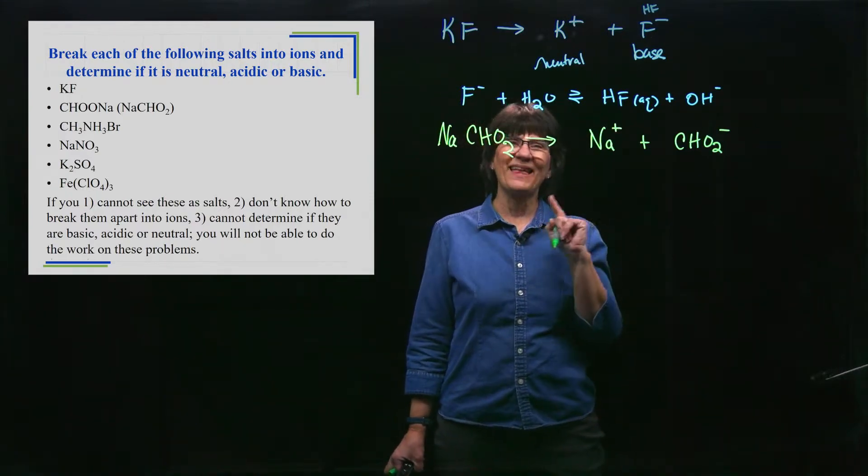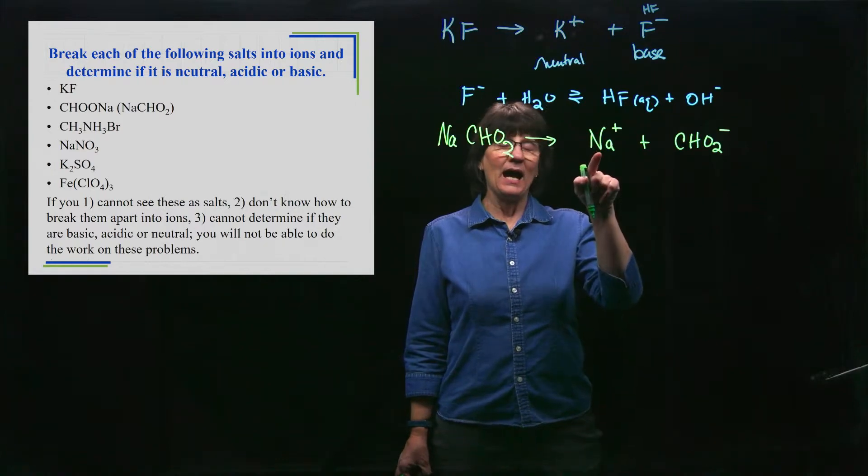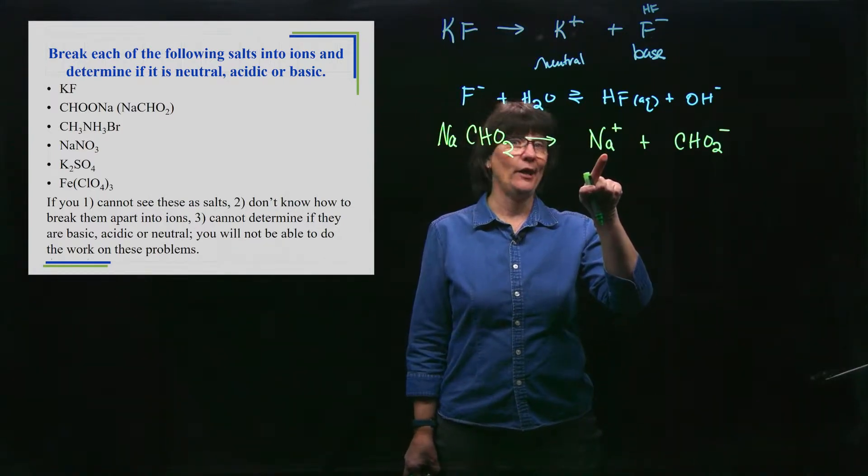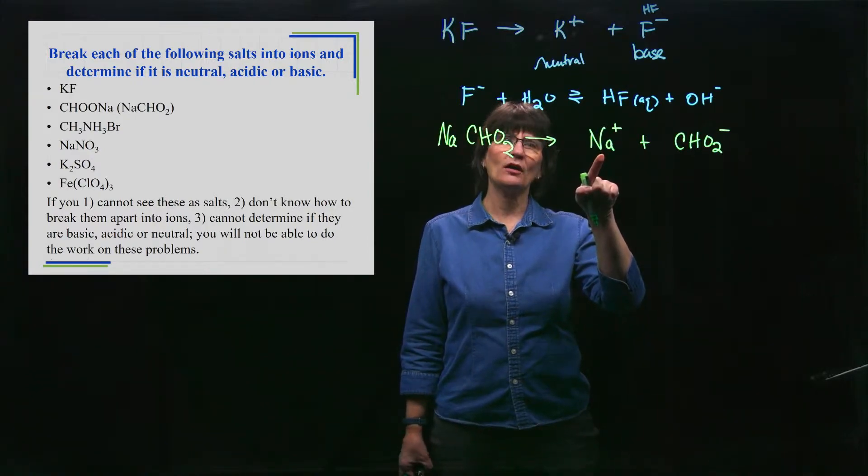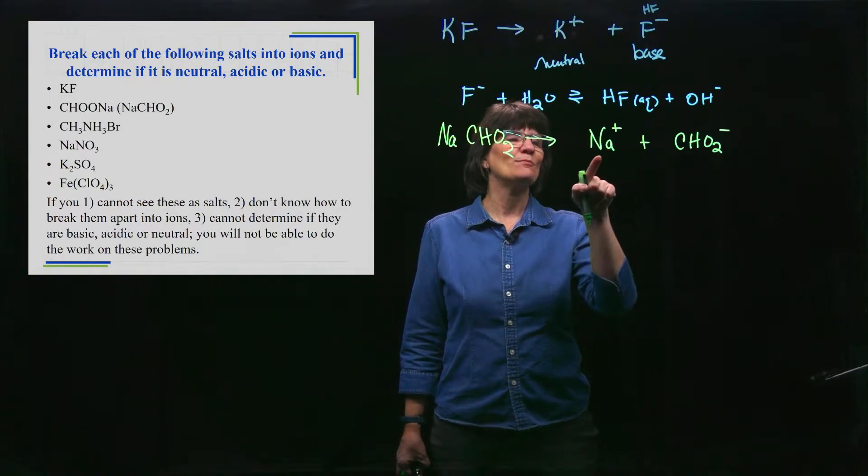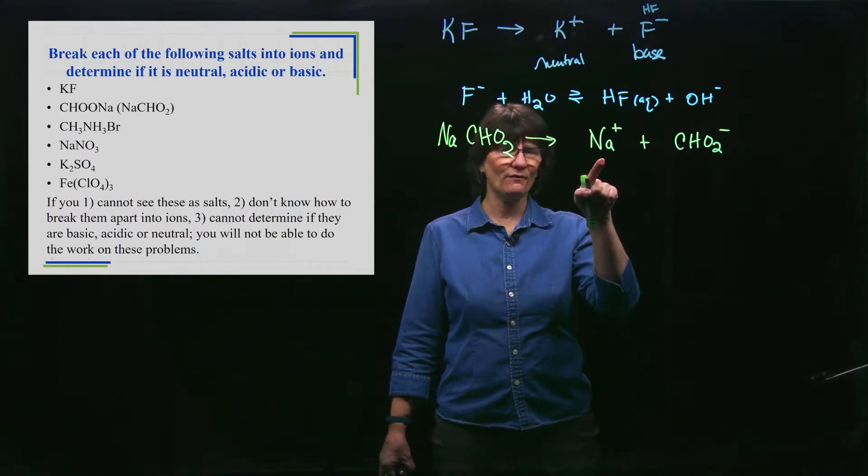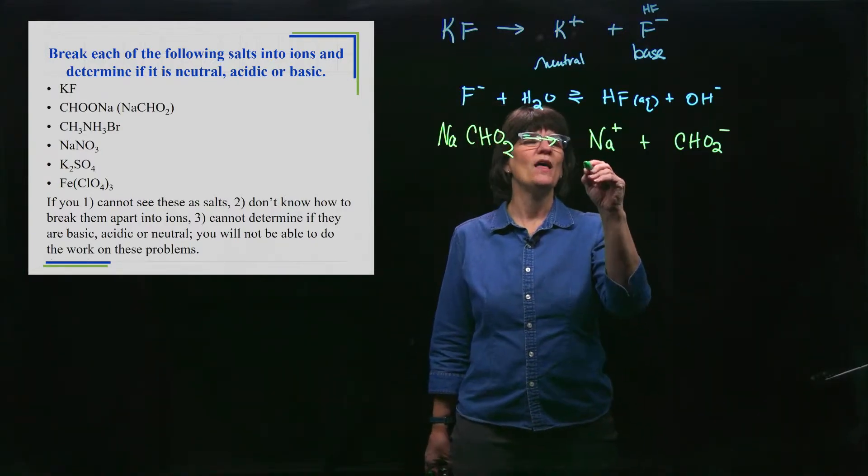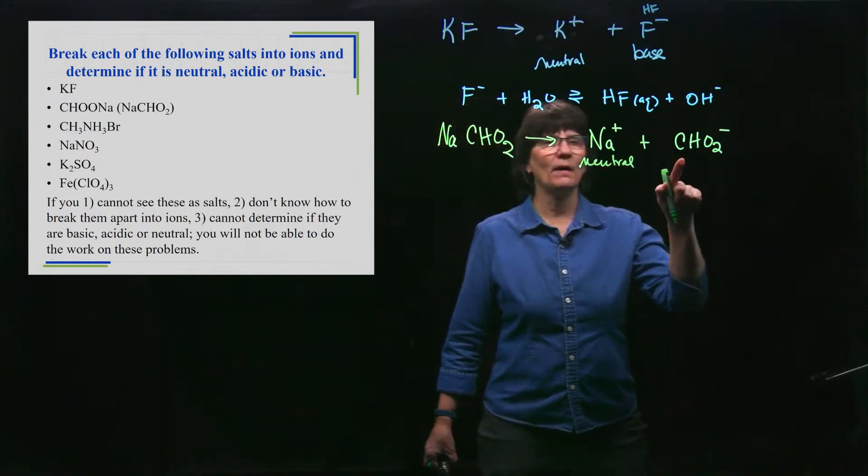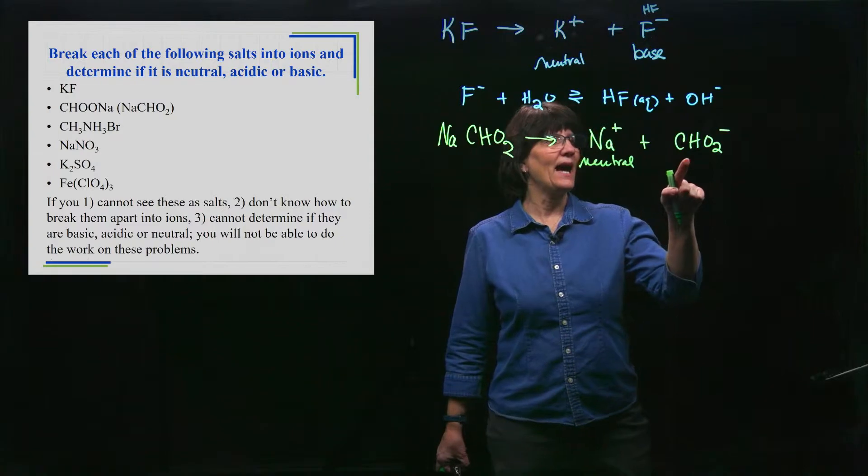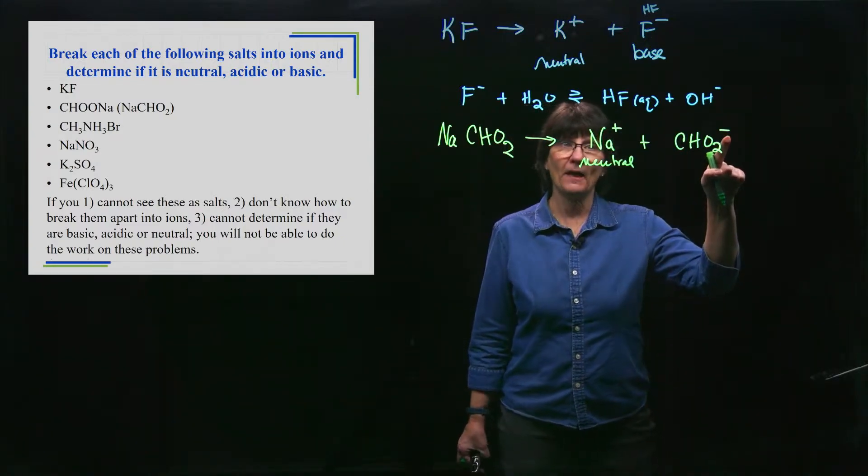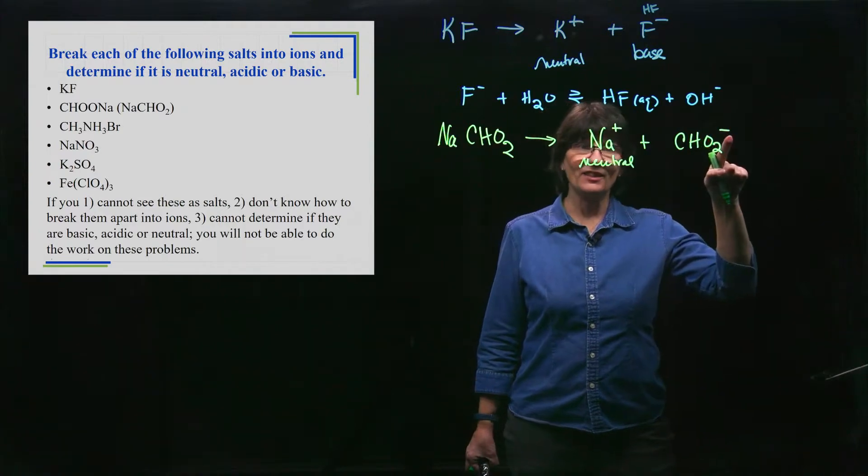Then I examine the cation and the anion. The cation is a 1A metal - I know that's neutral, but that's kind of a memorized statement. The way I don't memorize it is to ask: does it have a proton to donate? No. Could it accept a proton? Protons are positively charged, so it wouldn't accept a proton. Is it small and highly charged so it can do that funky thing with water? No. This is neutral.